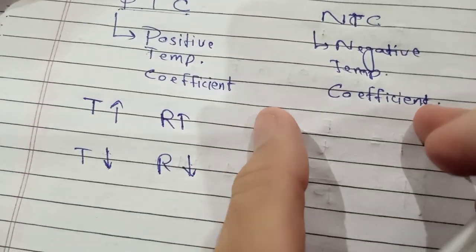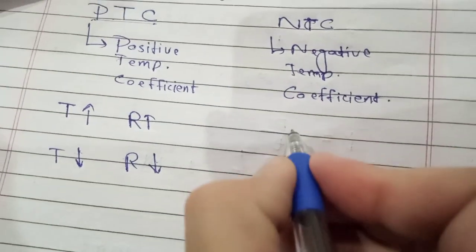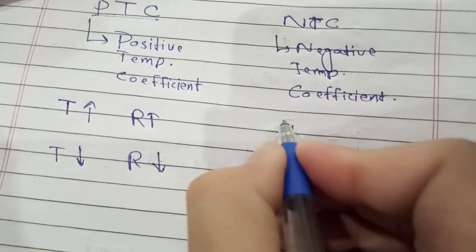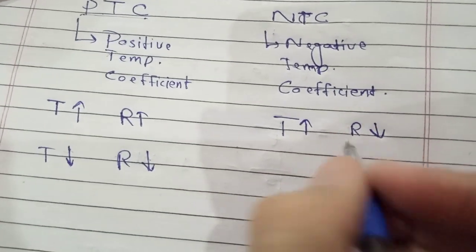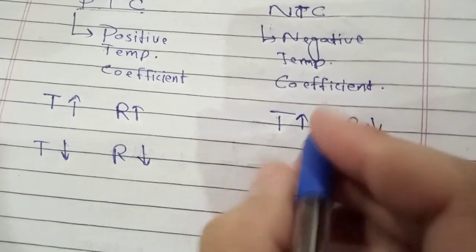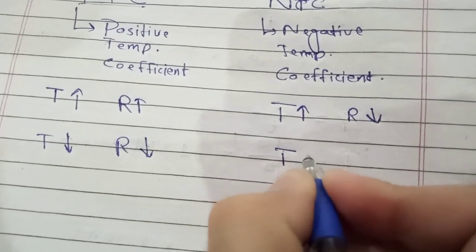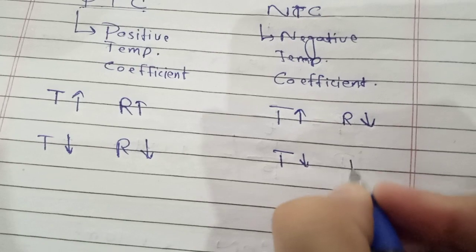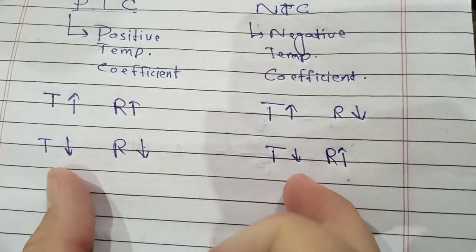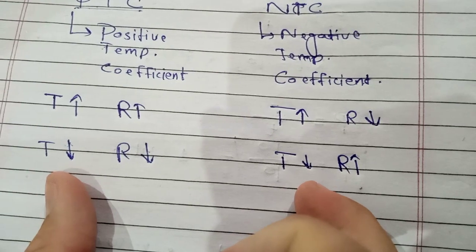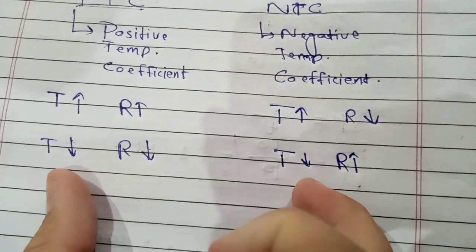On the contrary, with NTC — negative temperature coefficient — when we increase temperature, the resistance goes on falling. But if we reverse the phenomenon, that is, if we reduce the temperature, then the resistance goes on increasing. So these are the two types of thermistors.